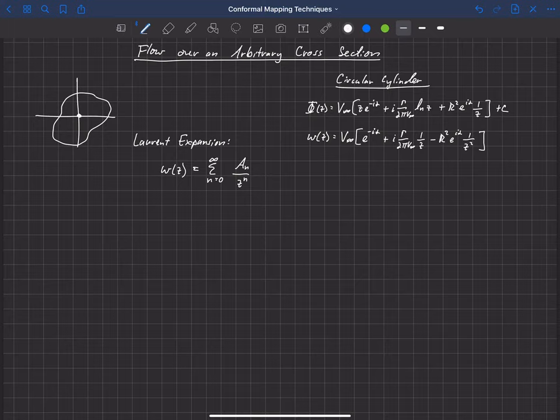So these a sub n terms are complex constants. They can have both real or imaginary terms within them, or both, they can have either or, or a combination.